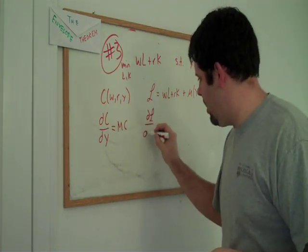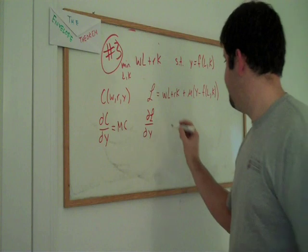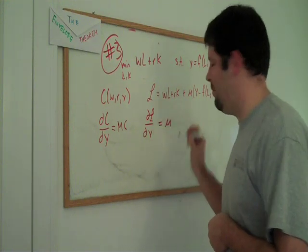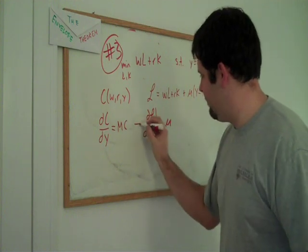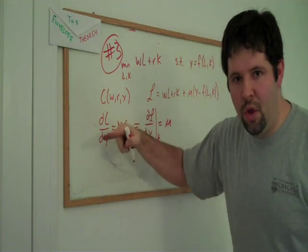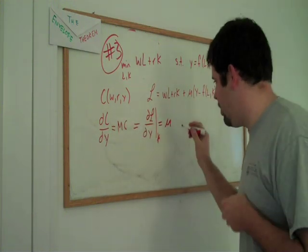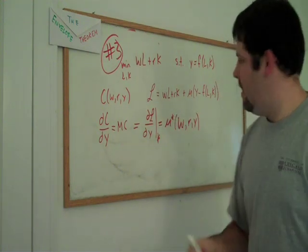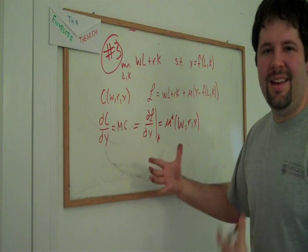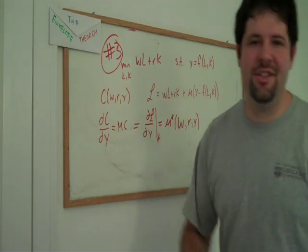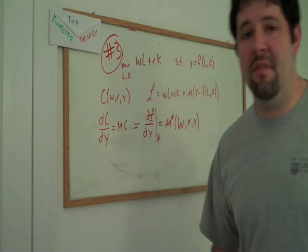Partial derivative of the Lagrangian with respect to y. This is going to be our Lagrange multiplier. We evaluate at the optimum. That makes it equal through the envelope theorem to our marginal cost. Mu is our marginal cost. And so, that's a really neat, interesting result that just pops out of the envelope theorem.